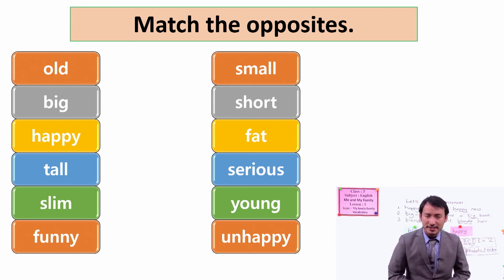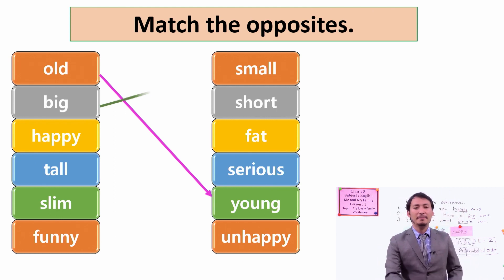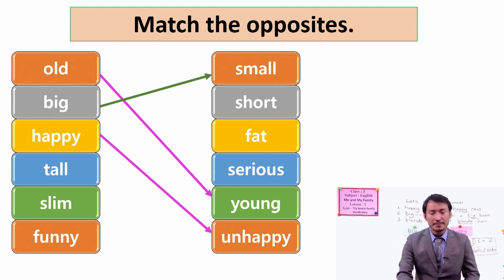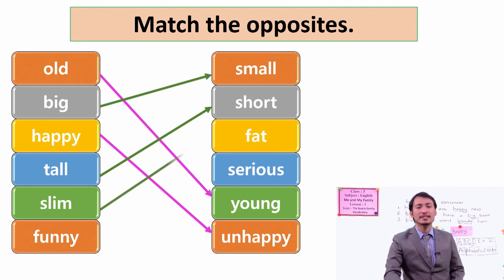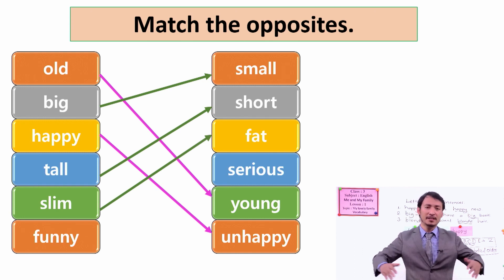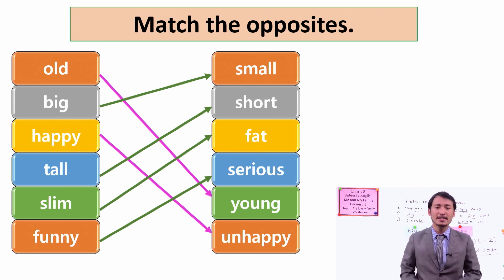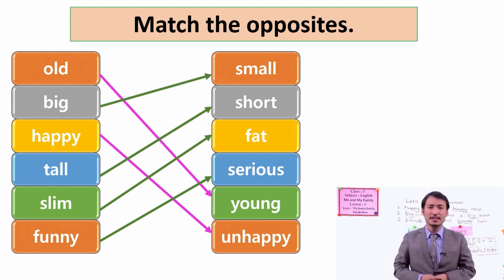I think you have already finished doing this. Now check yourself. Old is opposite to young, and big is opposite to small, happy is opposite to unhappy. Tall means very high, and short means very small in height. Slim means having no fat in the body, and fat means a lot of big fatty body. And funny means doing a lot of jokes and laughing a lot, and serious means not being happy, being sad and not giving good responses to others.